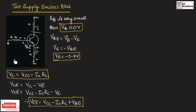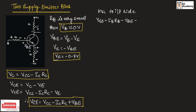If we apply KVL for the input side, we can write: Vee minus Ib·Rb minus Vbe minus Ie·Re is equal to 0. Rearranging, Vee is equal to Ib·Rb plus Vbe plus Ie·Re.